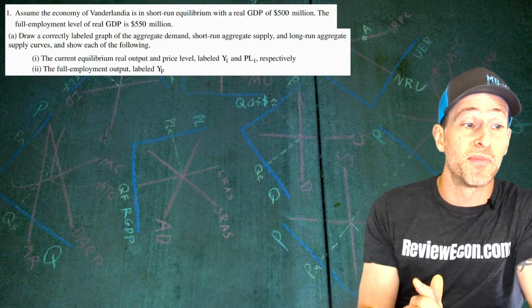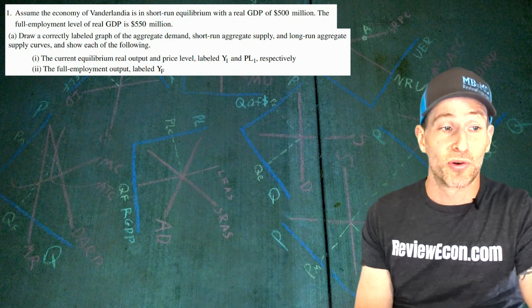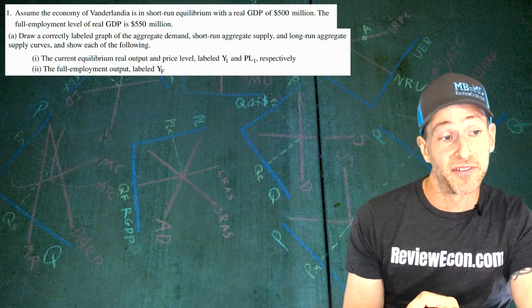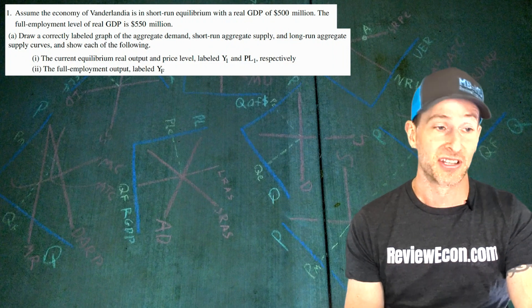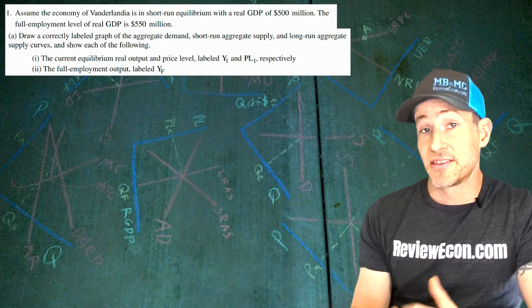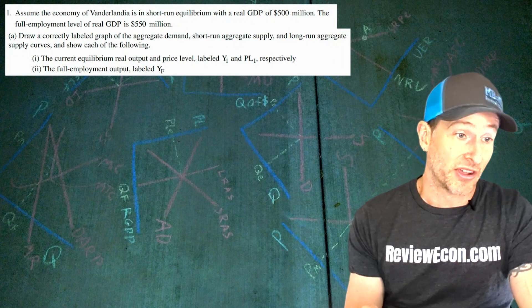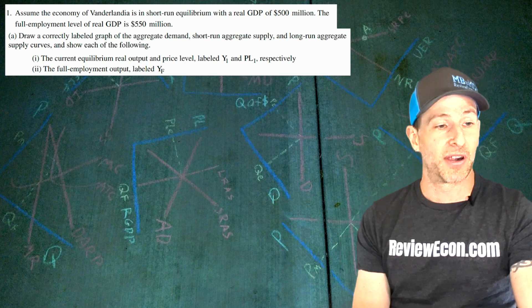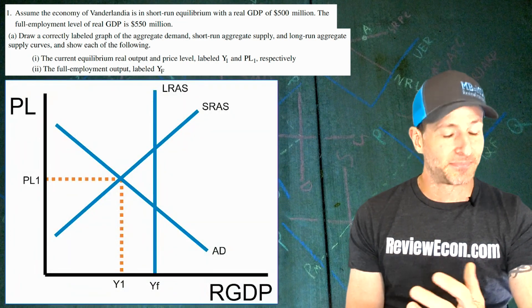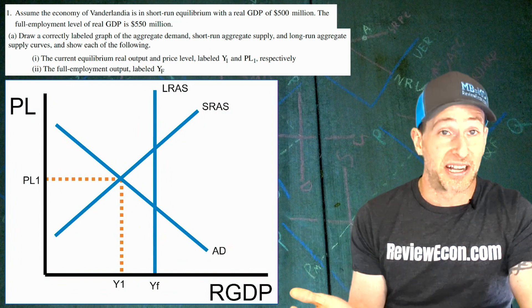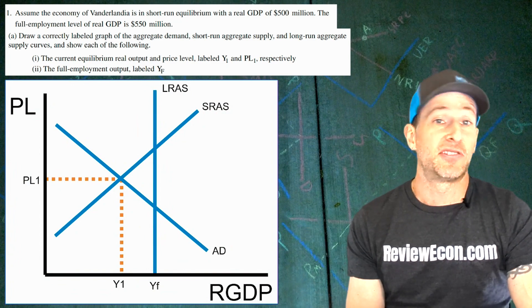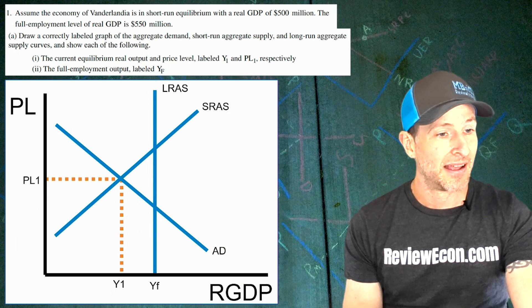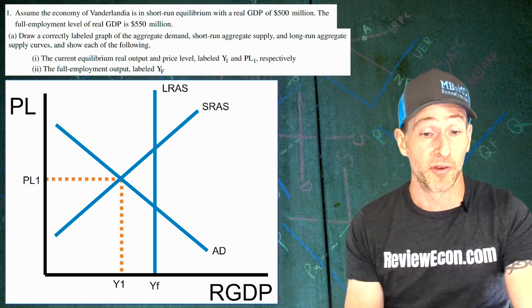Question number one: we're going to assume that Vanderlandia is in short run equilibrium with a real GDP output of $500 million. Their full employment level of output is $550 million. We're going to draw an ASAD model with the standard labels, labeling the current output Y1, price level PL1, and the full employment level of output YF. As you can see in the graph, we've got a recessionary gap — YF must be to the right of Y1. I expect this graph will be worth two rubric points.